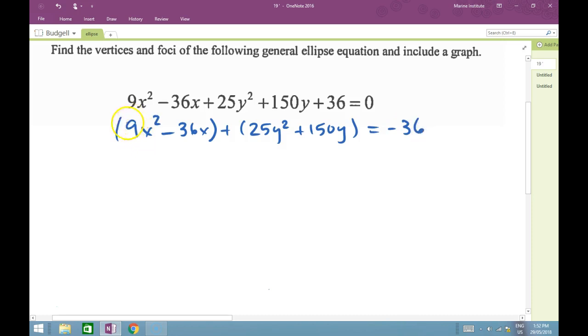Now we look and see, I have a number in front of my x². I have to factor that out of both x terms. I have a number in front of my y² and factor that out of both y terms. Take out 9, we have 9(x² - 4x), take out 25: 25(y² + 6y) = -36.